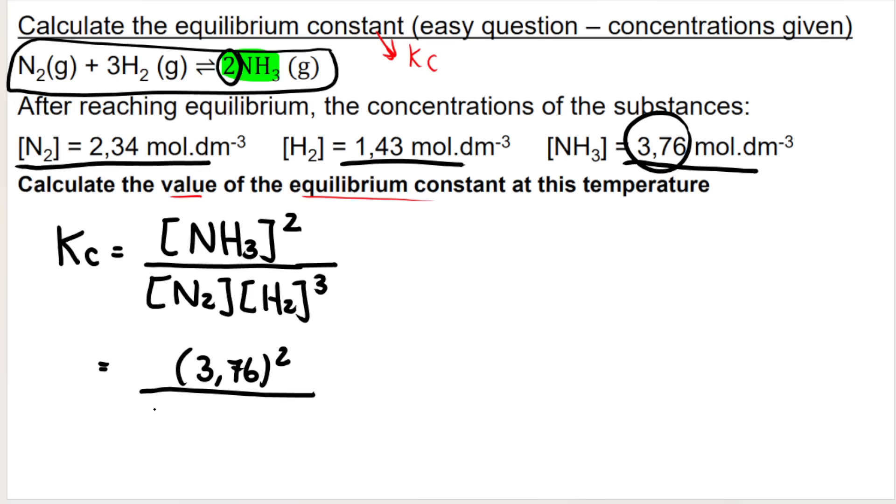Then nitrogen is 2.34 multiplied by hydrogen cubed. 1.43 cubed because of the 3 over there. Then you type that into your calculator. You should get 2.07.